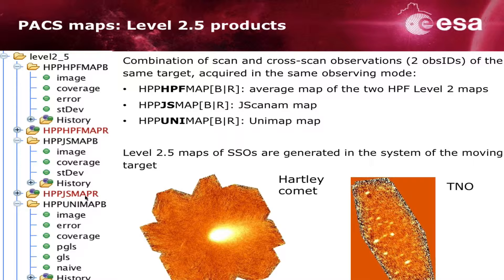An important note: for solar system objects, Level 2.5 maps are also generated. For this kind of source, the processing is performed in the reference system of the moving target. As examples, you can see a comet and a trans-Neptunian object, where the object at the center of the image is point-like while serendipity targets around it appear elongated, because they belong to the fixed sky frame rather than the moving object's reference system.